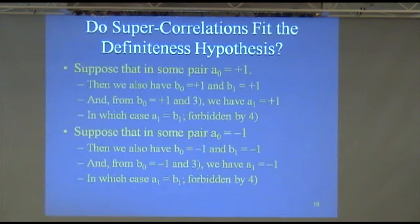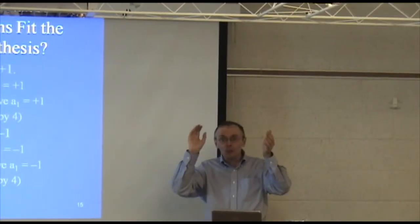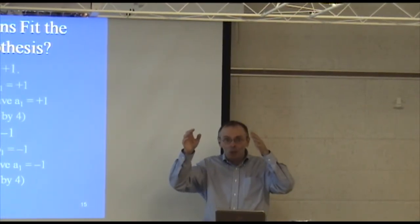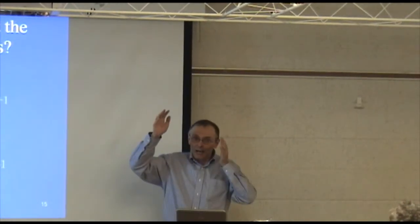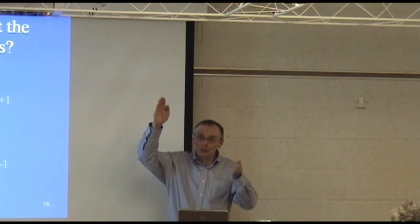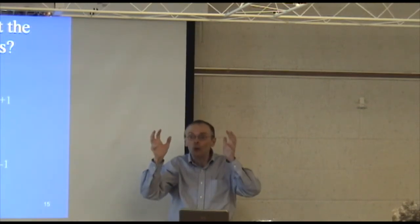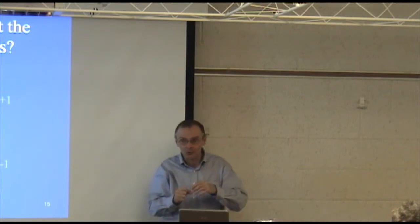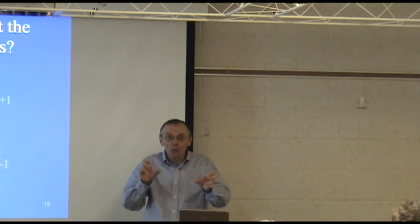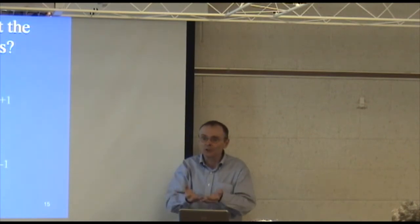The problem is this. In this imaginary case, when they're both measuring their 0 case, A0, B0, the results agree. When Alice is doing 0 and Bob is measuring 1, the results agree. When Alice is doing 1 and Bob is doing 0, the results agree. And that forces, just by the logic of the definiteness hypothesis, that in the A1, B1 case, the results would have to agree. But we're imagining these super correlations where they don't agree.